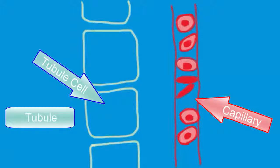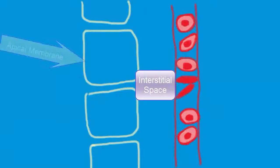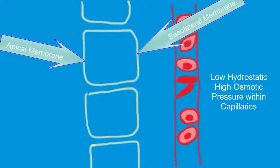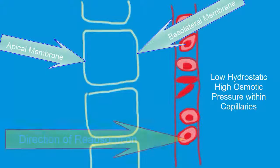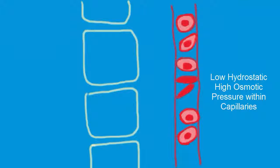As I label the different elements of the proximal convoluted tubule and peritubular capillaries, keep in mind that the peritubular capillaries, which branch off of the efferent arteriole, are now a low hydrostatic pressure and high colloid osmotic pressure system. Anything that makes it into the interstitial space will get reabsorbed back into the bloodstream.